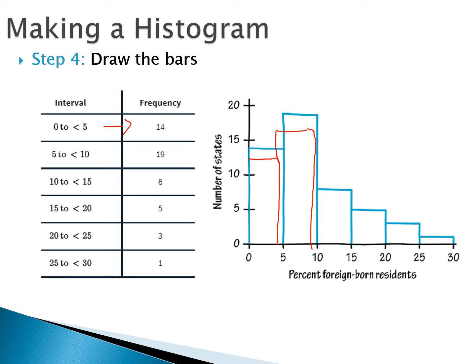Keep in mind the area rule: we want these bars to be about the same width. The height tells us the proportion of the data that falls in that bar.